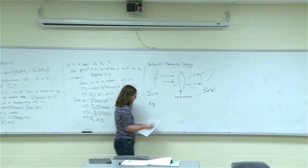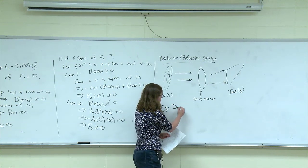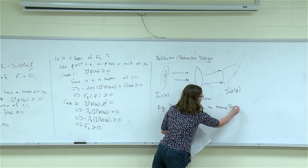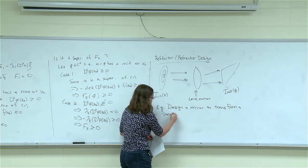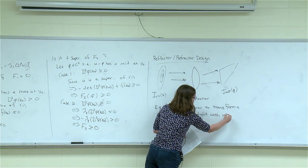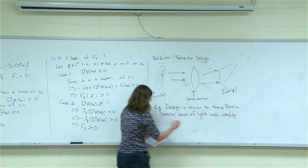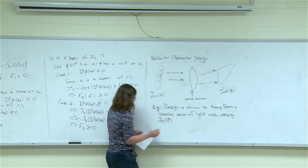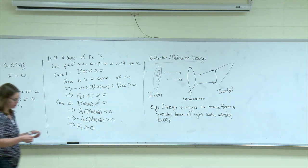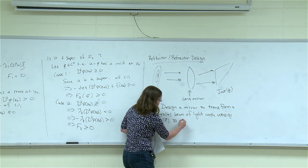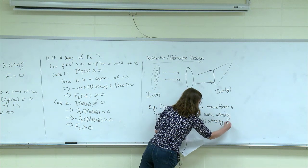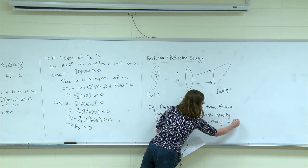This is our model problem: let's design a mirror that transforms a parallel beam of light with a given intensity, and we're going to bounce this off into some target intensity in the far field. We want to transform this to a desired target intensity — I'll call it I-out — in the far field.